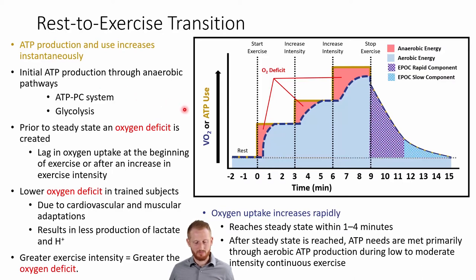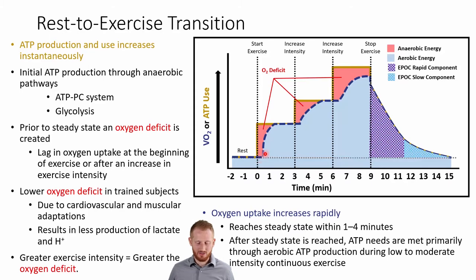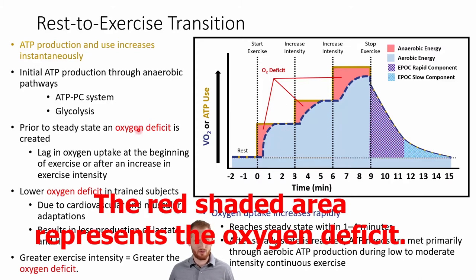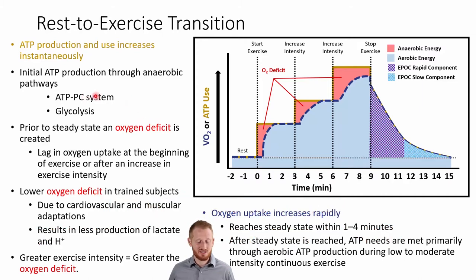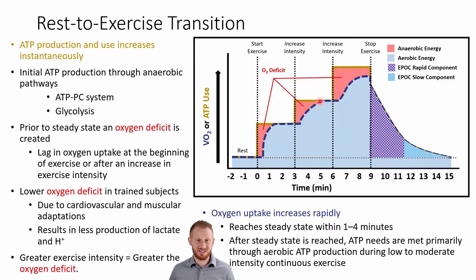Notice that when we go from rest — where we use almost entirely aerobic energy — and start to exercise, there's a period represented by the red shaded area of anaerobic energy production. Eventually the aerobic line curves up and catches up to meet the needs of that exercise intensity. But before it does, we have to produce energy anaerobically. During this oxygen deficit, we're using the ATP-phosphocreatine system and glycolysis, and this happens every time we increase exercise intensity, until aerobic metabolism ramps up and fully fuels that intensity level.